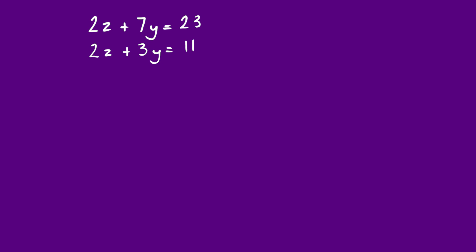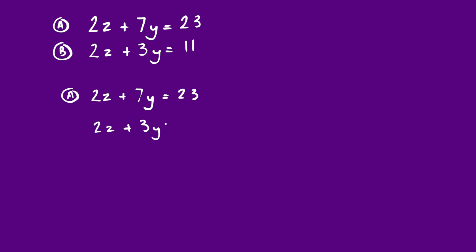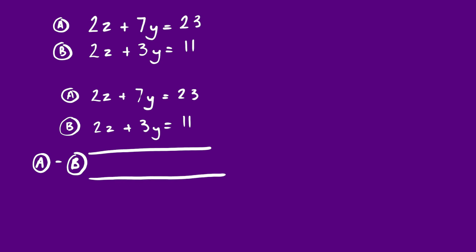I'll label the first equation A and the second one B — good practice to keep things clear. Then I'll subtract equation B from A. You must subtract everything in the second equation from the first: 23 take away 11 is 12; 7y take away 3y is 4y; and 2z take away 2z is 0 — the z's have gone. So we're left with 4y = 12. If 4y is 12, then y must be 3.